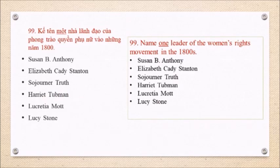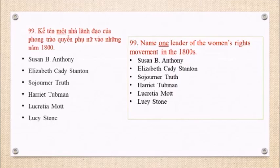Question 99: Name one leader of the Women's Rights Movement in the 1800s. Susan B. Anthony. Elizabeth Cady Stanton. Sojourner Truth. Harriet Tubman. Lucretia Mott. Lucy Stone.